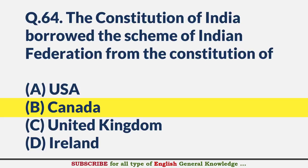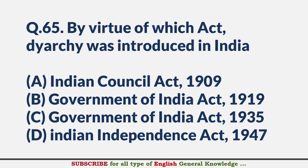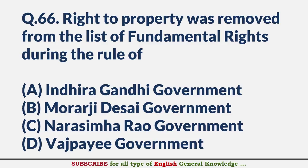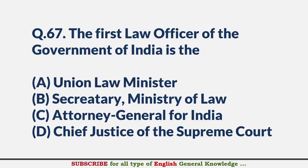By virtue of which act was DRC introduced in India? — Answer B: Government of India Act 1919. Right to Property was removed from the list of fundamental rights during the rule of? — Answer B: Morarji Desai Government. The first law officer of the government of India is? — Answer C: Attorney General of India.